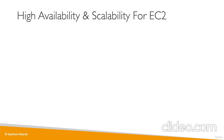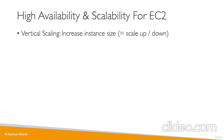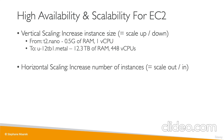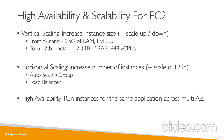To summarize high availability and scalability for EC2: vertical scaling means increasing instance size — scale up or scale down — ranging from a T2 nano with 0.5 GB RAM and one vCPU all the way to a U12TB1.metal with 12.3 terabytes of RAM and 448 vCPUs. Horizontal scaling means increasing the number of instances (scaling out) or decreasing them (scaling in), using an auto-scaling group and a load balancer. High availability means running instances across multiple AZs using an auto-scaling group in multi-AZ mode and a load balancer in multi-AZ.